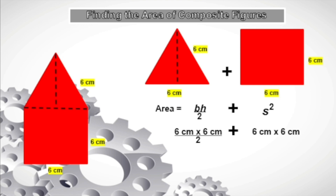For the area of the triangle: 6 centimeters times 6 centimeters equals 36 centimeters squared, divided by 2 gives 18 centimeters squared. For the area of the square: 6 centimeters times 6 centimeters equals 36 centimeters squared. To get the area of the figure we add the two: 18 centimeters squared plus 36 centimeters squared equals 54 centimeters squared. Therefore, the area of this figure is 54 centimeters squared.